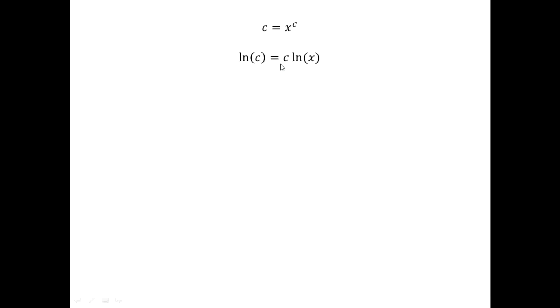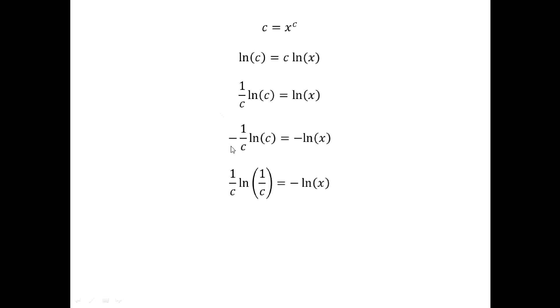To find C in terms of X, starting from C = X^C, I take the natural log of both sides: ln(C) = C · ln(X). Then I divide both sides by C: (1/C) · ln(C) = ln(X). Next I negate both sides, and using a logarithm property, the negative goes inside the log to invert the argument: (1/C) · ln(1/C) = −ln(X).